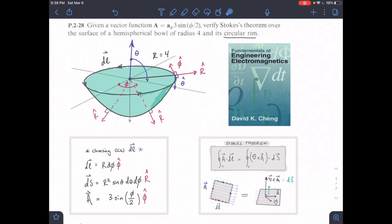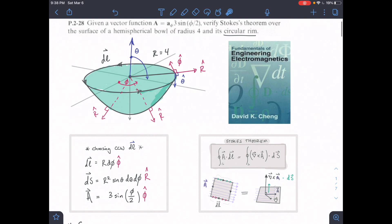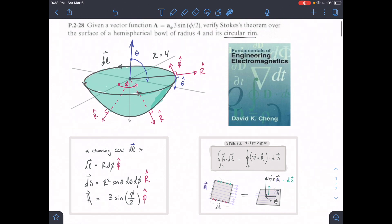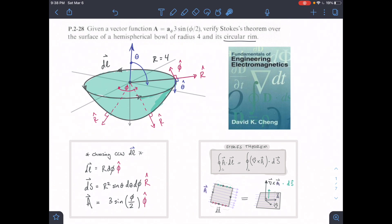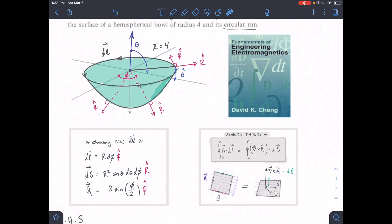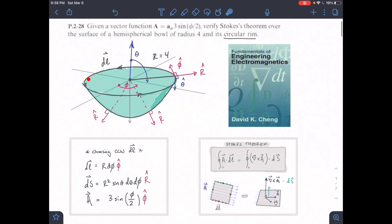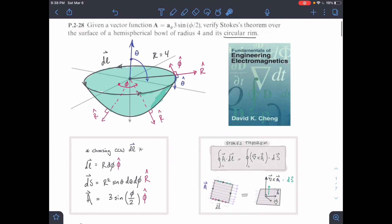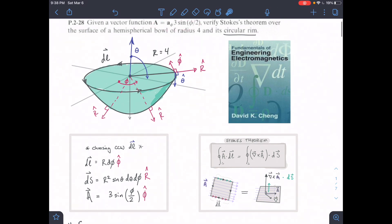We have a couple of choices here. I'm going to set this up with a counterclockwise DL. That means this DL is along this circular rim here. To verify Stokes' theorem, like in previous videos, we're going to set up this DL around the circle of the rim and dot it with our A vector, then integrate across the bounds for DL.